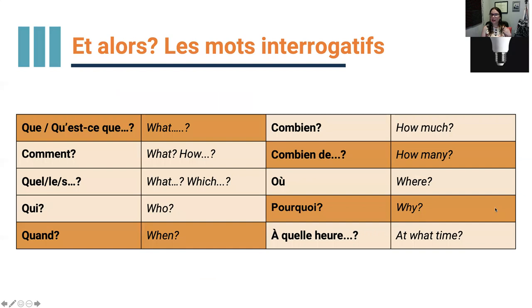Et alors, les mots interrogatifs — which is a fancy word for question words. Que ou qu'est-ce que? Qu'est-ce que — what? Qu'est-ce que tu vois? What do you see? Comment? Comment est-ce qu'on peut voir? How can one see? Or it's a polite way of asking 'huh?' — like 'what?' — just by itself.